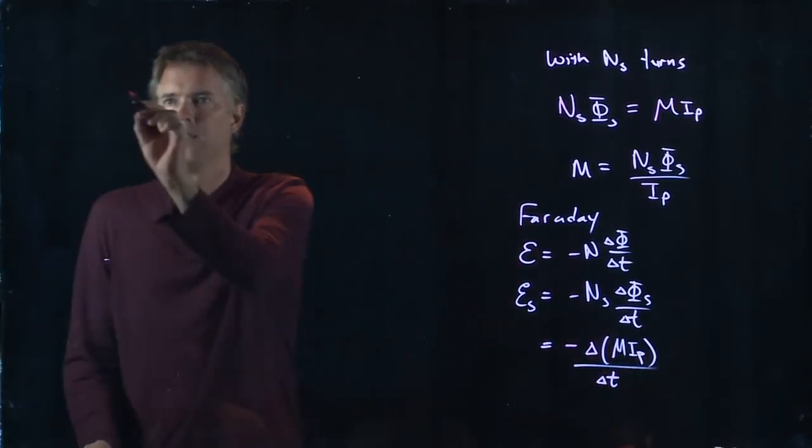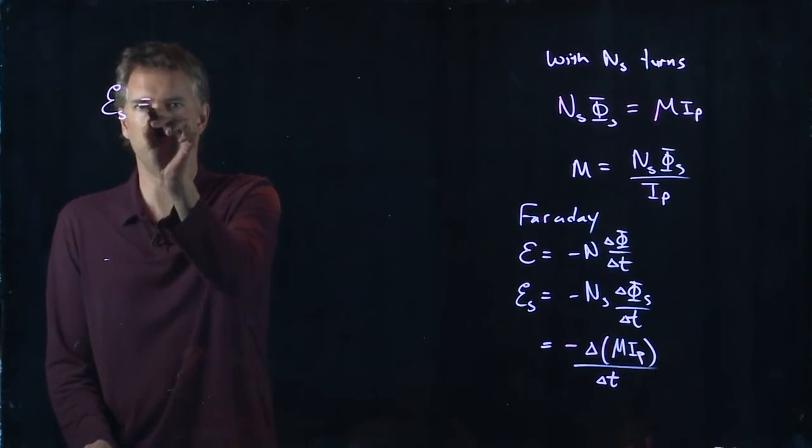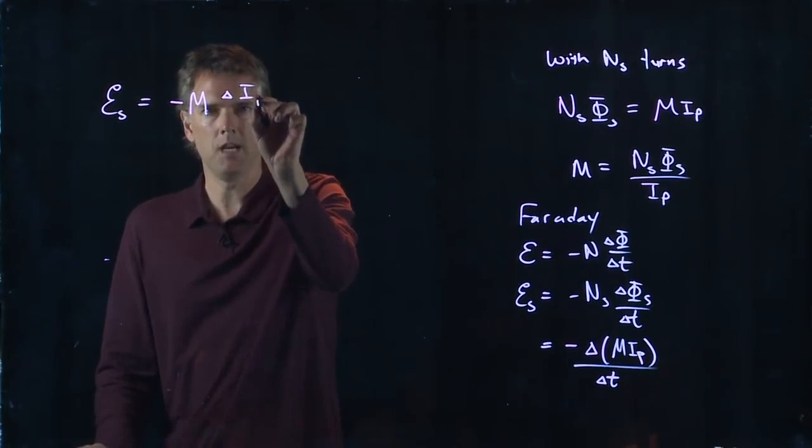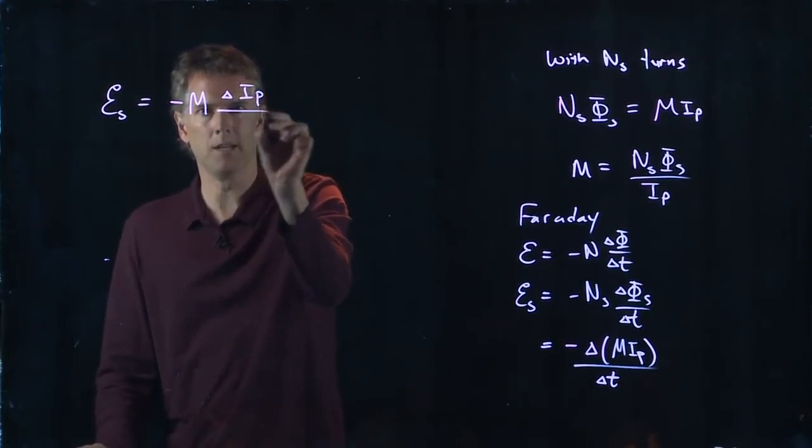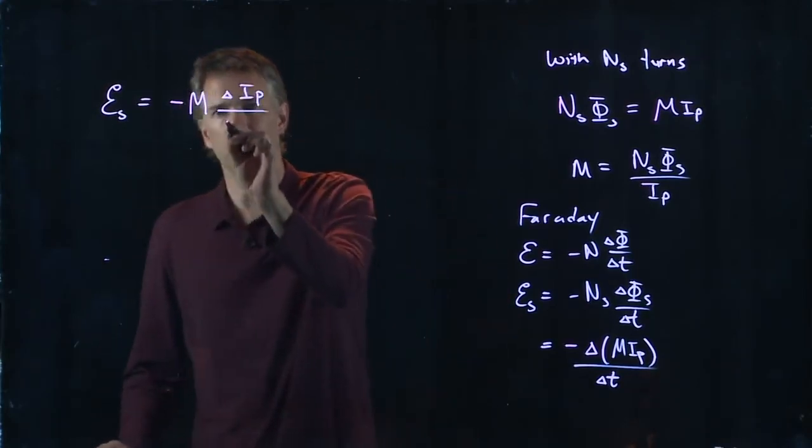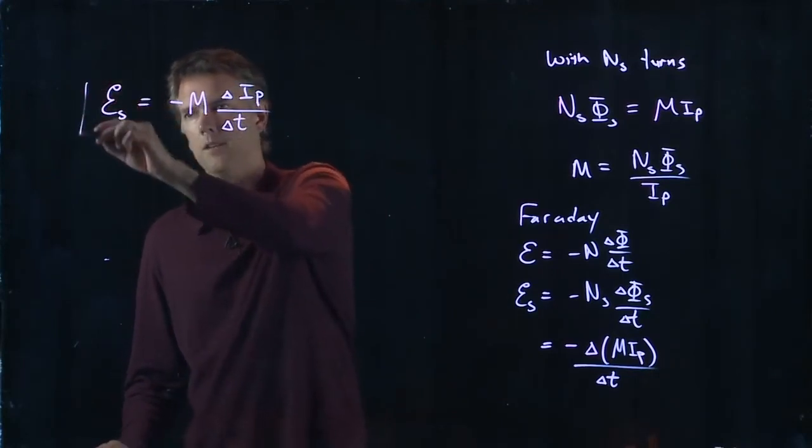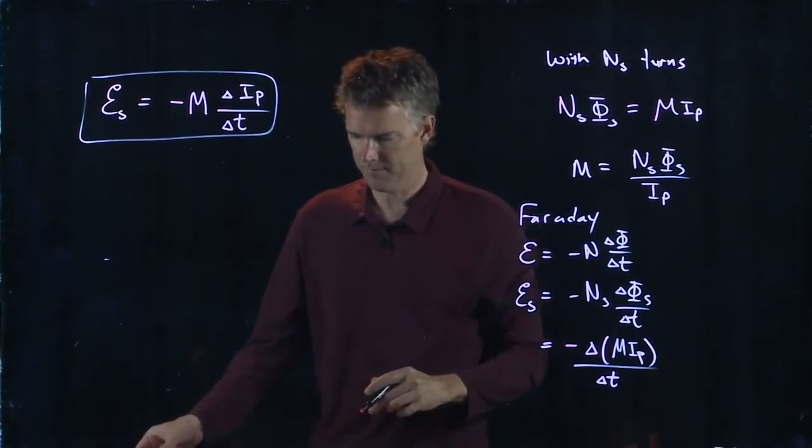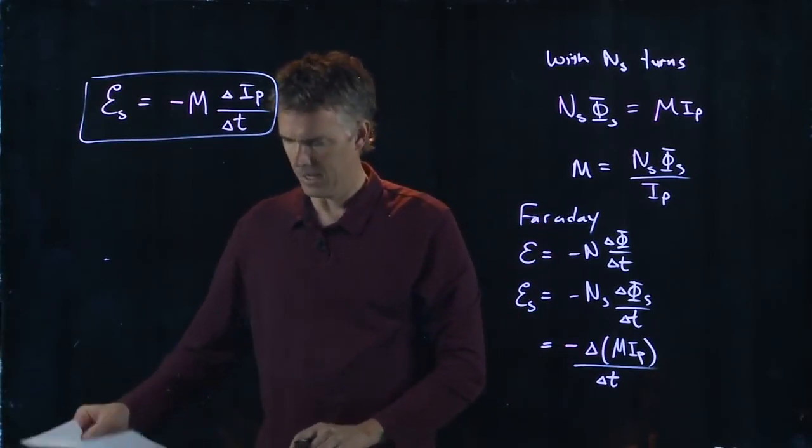And we get an equation for the EMF in the secondary. It is minus M change in the primary current, delta I_P divided by delta T.